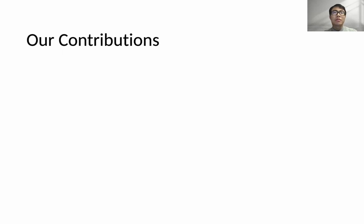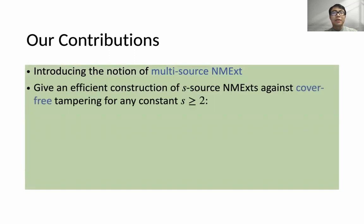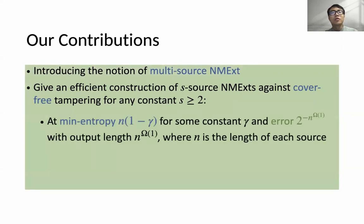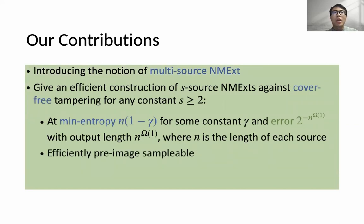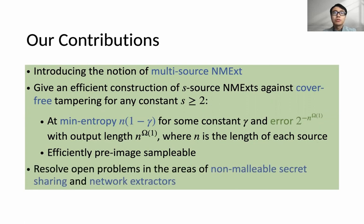Now I will summarize our main contributions. We first introduce the notion of multi-source non-malleable extractor, and then we give an efficient construction of an s-source non-malleable extractor against cover-free tampering for any constant s greater than or equal to 2. The min-entropy requirement of our construction is linear in n, with negligible error and polynomial output length. Also, the construction satisfies the property called efficiently pre-image-sampleable, meaning that given any output, one can efficiently sample over its pre-image. Using similar techniques, we further resolve some open problems in non-malleable secret sharing and network extractors.